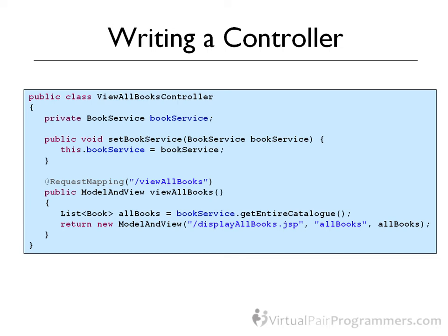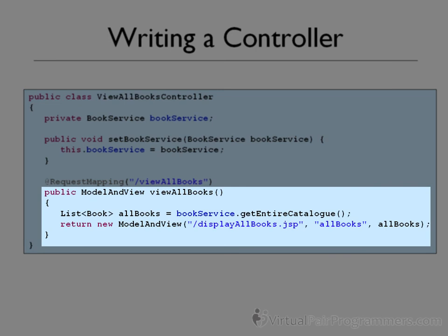The main focus of interest here is the ViewAllBooks method. Note that you can call this method absolutely anything you want — no restrictions. Just give it a nice name that reflects its purpose. The return type is a Spring class called ModelAndView. This is a wrapper object that Spring uses to hold two separate things: first, the results of the use case — for us, this is going to be a collection holding all of the books in our system. Second, it wraps a reference to the view that we want Spring to use. For now, this is just going to be a file name pointing to the correct JSP page.